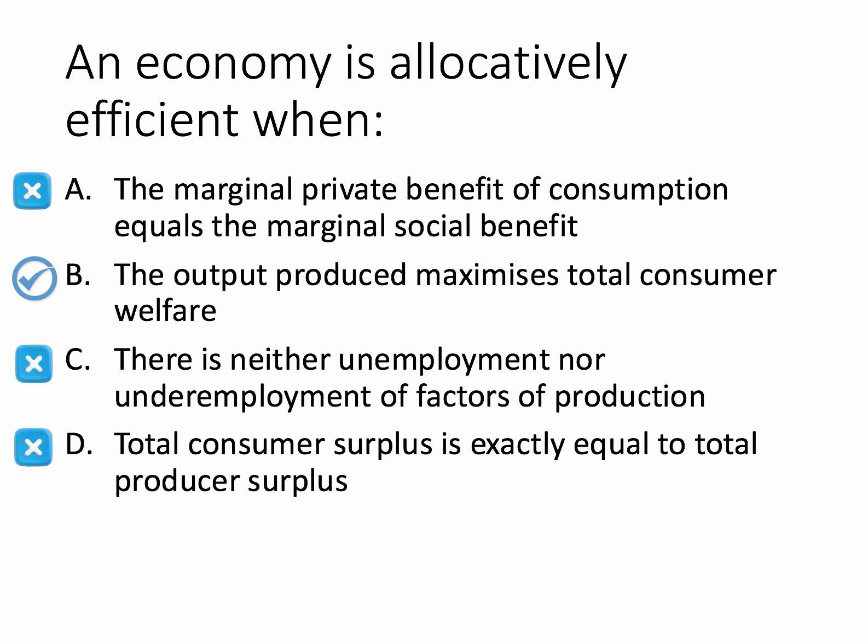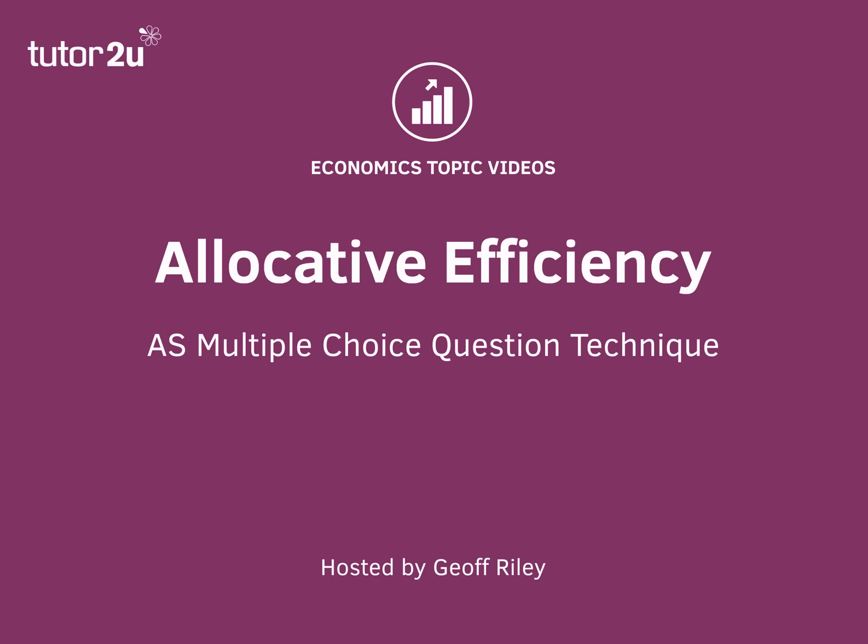Option C — there is neither unemployment nor underemployment of factors of production — is really focusing more on productive or technical efficiency, not allocative efficiency. Option D — total consumer surplus equals producer surplus — is simply incorrect. So the answer is B: allocative efficiency is the output which maximizes total consumer welfare.